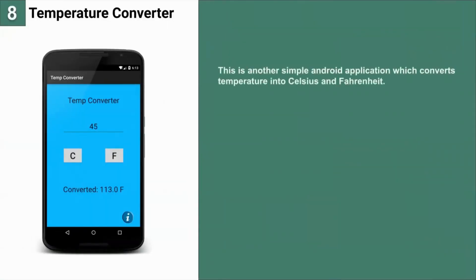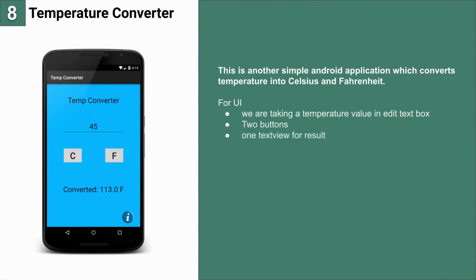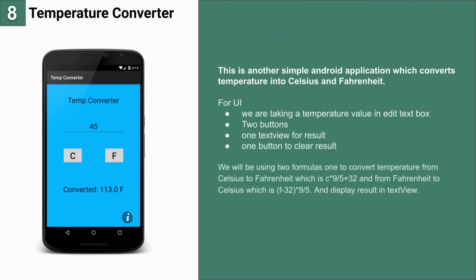This is another simple Android application which converts temperature between Celsius and Fahrenheit. For the UI part, we take a temperature value in an edit text box, two buttons, one text view for the result, and one button to clear the result. We will use two formulas: one to convert from Celsius to Fahrenheit, and one from Fahrenheit to Celsius, then display the result in the text view.